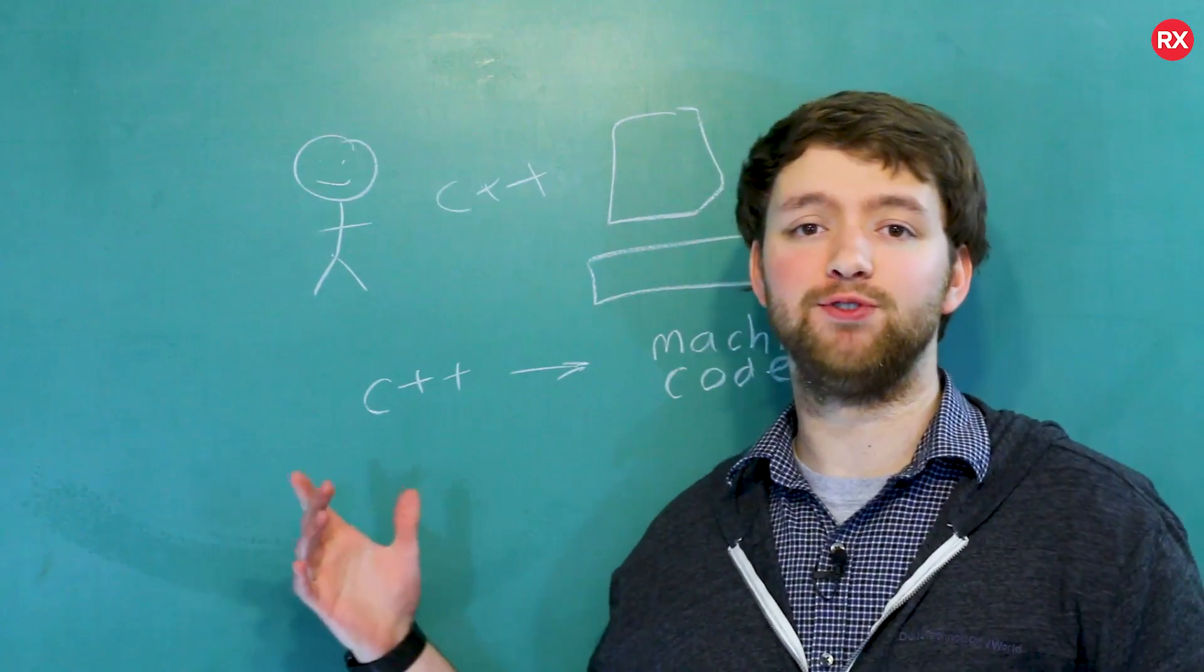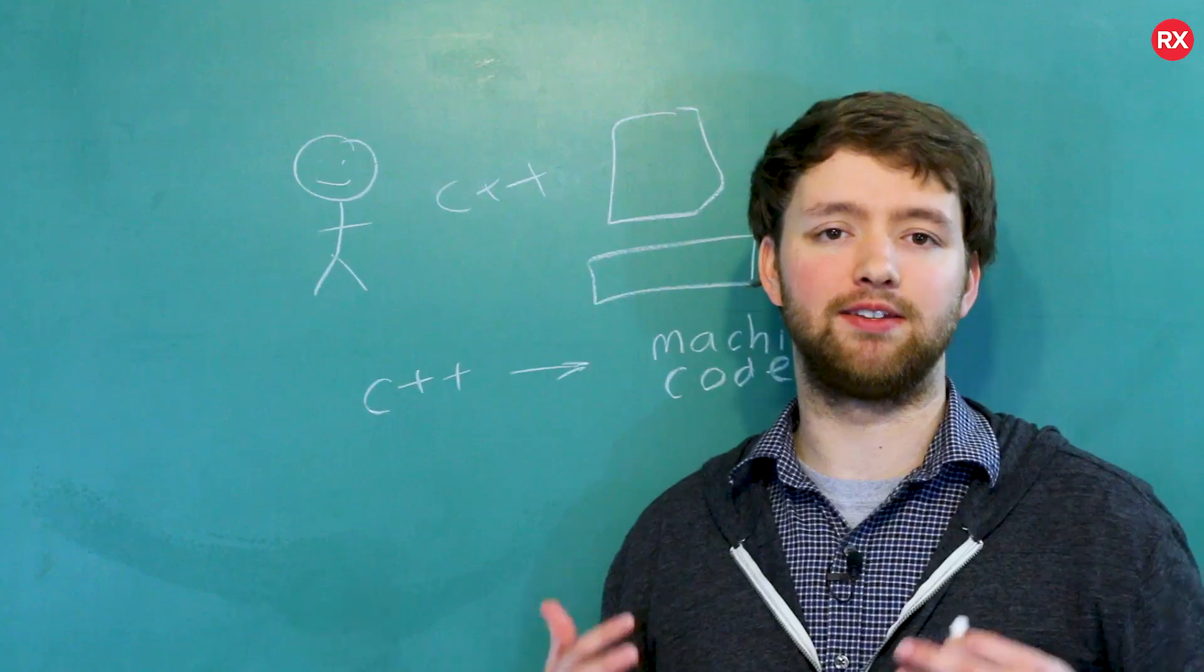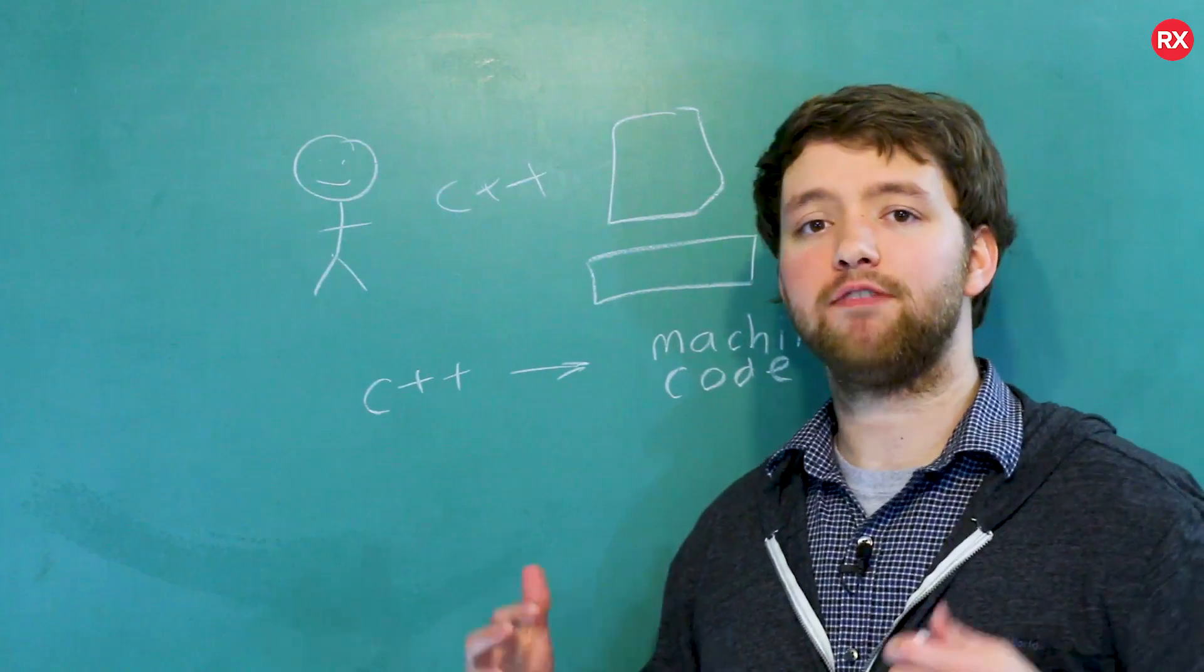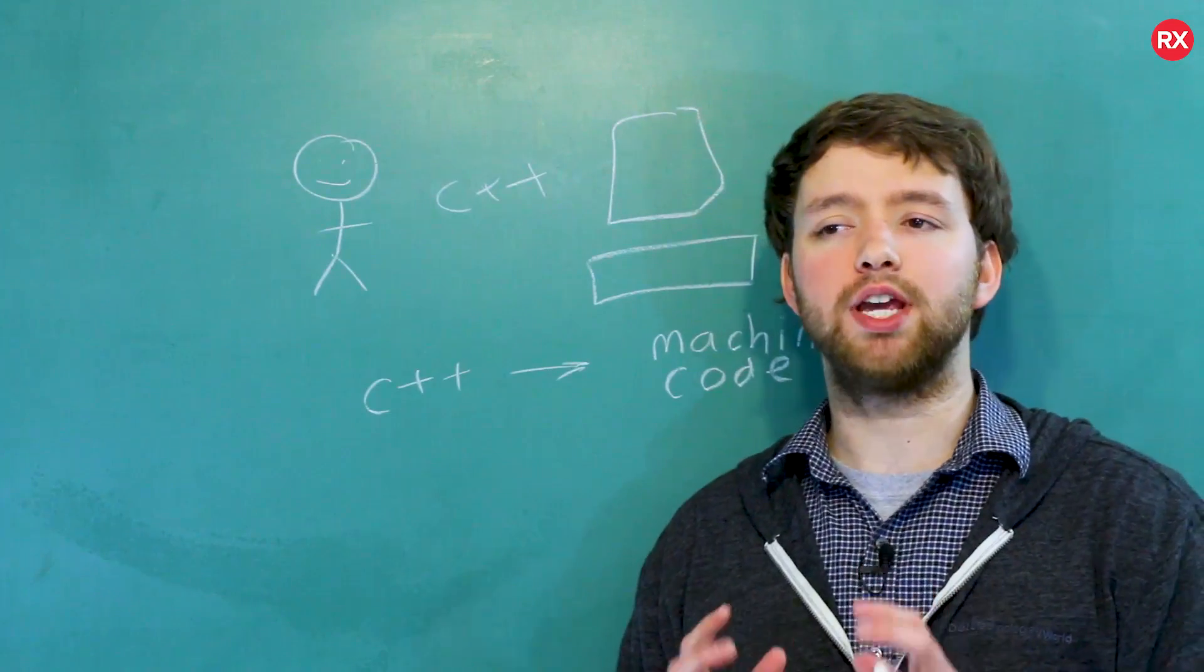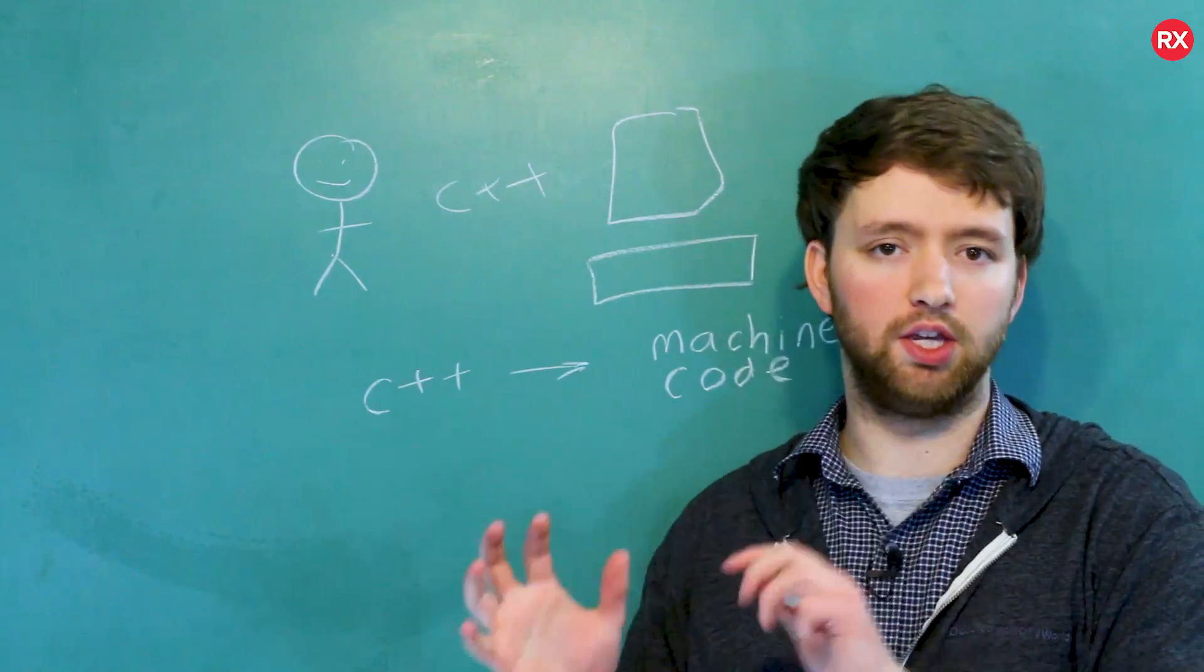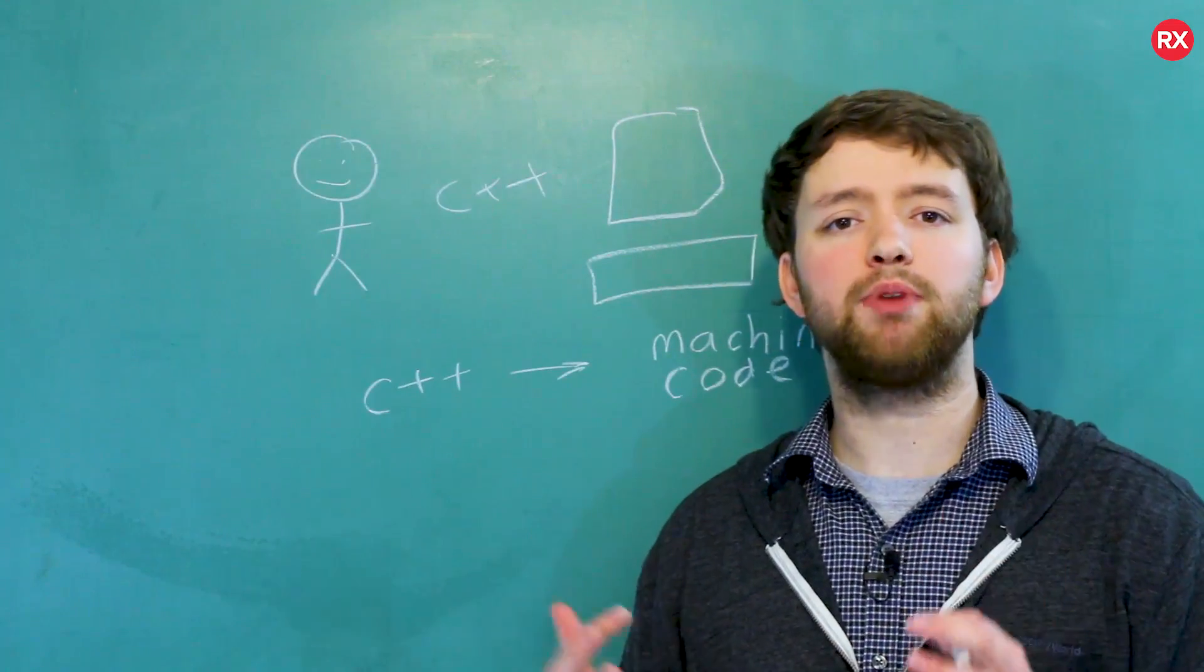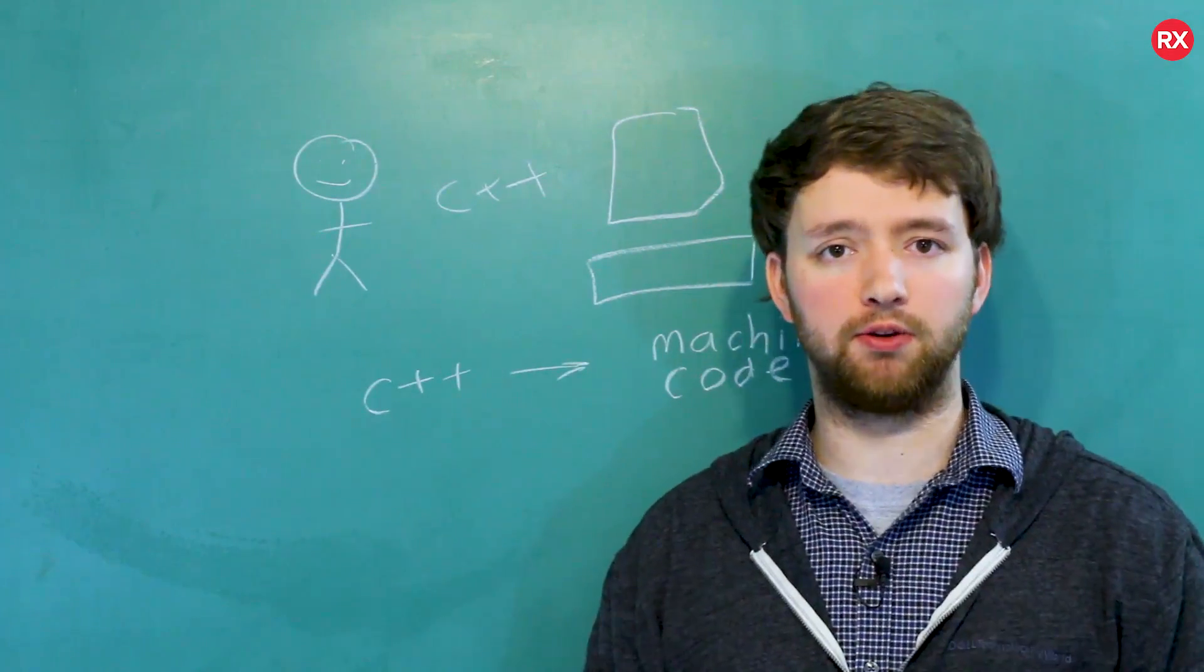So the benefits of using a language that's compiled is that it's impossible to make syntax errors. We can still have what are known as logical errors where our code doesn't work the way we wanted to. But if there's any kind of typo or issue when it comes to the keywords of C++, the compiler is going to scream its face off and refuse to compile our code.